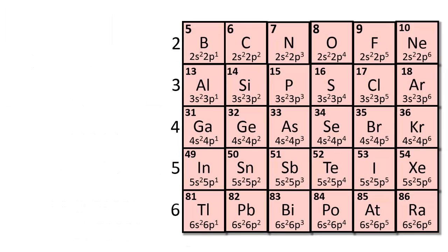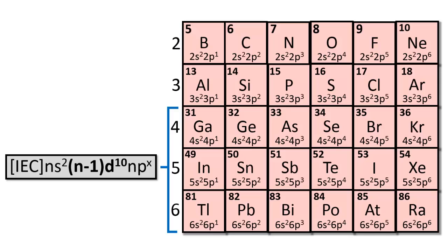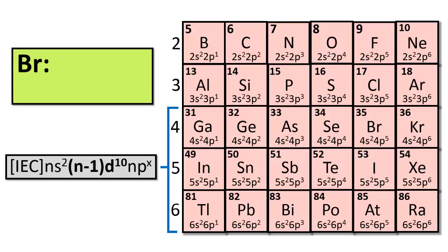For p-block elements located in the fourth period and below, there's also going to be 10 d-electrons in the n-1 principal energy level. Bromine's electron configuration, for instance, is going to be the inner electron configuration — which is that of argon — plus 4s² 3d¹⁰ 4p⁵.